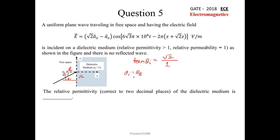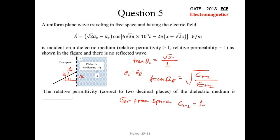Since there is no reflected wave, this is the Brewster angle: θᵢ = θ_B. From Brewster's law, tan(θ_B) = √(εᵣ₂ / εᵣ₁). For free space, εᵣ₁ = 1, and tan(θ_B) = √2. Therefore √(εᵣ₂) = √2, giving εᵣ₂ = 2. The relative permittivity of the dielectric medium is 2.00.